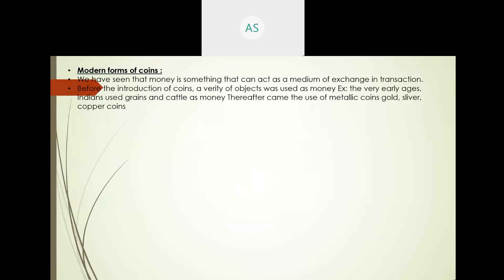After grains and cattle, some difficulties arose there too, so materials needed to be used as money for the medium of exchange. After that, they introduced metallic coins — they started minting gold, silver, copper, and bronze coins — and these started circulating in the entire society.